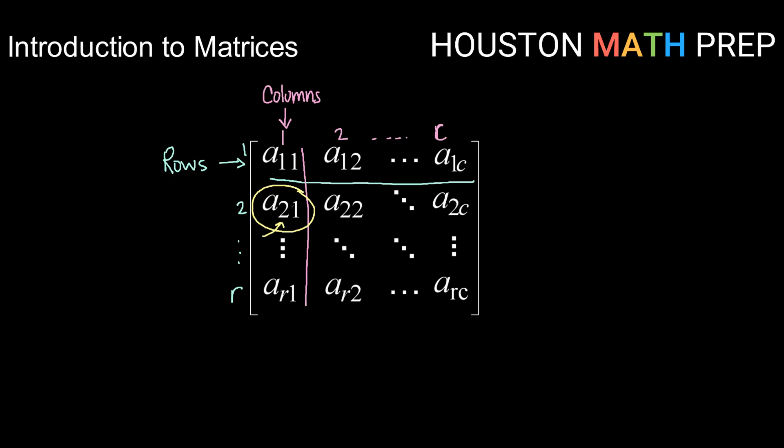When we write these, the number on the left tells us what row that entry is in, and the number on the right tells us what column we are in. This entry A21 is in row number two, column number one.